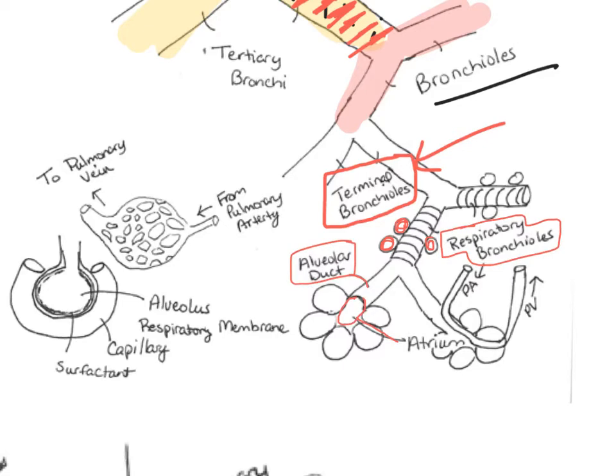That duct leads into the atrium, also called the alveolar sinus — an expanded pocket leading into all of the alveoli clustering there. On one of the models you have to be able to identify the alveolar duct as well as the alveoli.